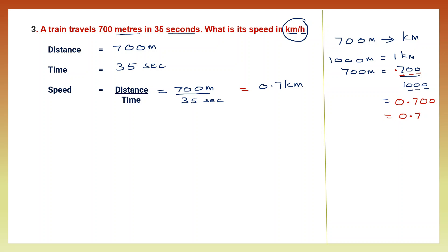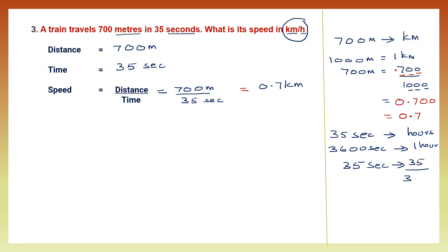Now we're going to convert 35 seconds to hours. In one hour we have 3,600 seconds. So 35 seconds will be 35 by 3,600 hours — you have to divide 35 by 3,600. So we have found the distance as 0.7 kilometers and converted 35 seconds into 35 by 3,600 hours.